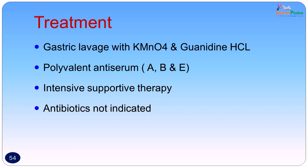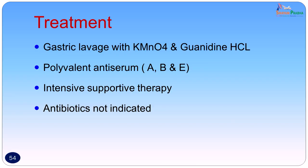The treatment includes gastric lavage with potassium permanganate; guanidine hydrochloride can act as an antidote; polyvalent antiserum — types A, B, and E — and intensive supportive therapy especially maintenance of respiration, with possible intubation. Antibiotics do not have a role to play in treatment, unlike tetanus. It is essentially the antiserum and supportive therapy which helps recovery from an episode of botulism.